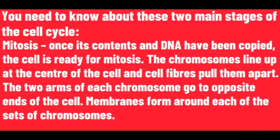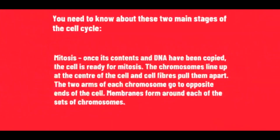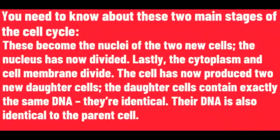The second stage is mitosis. Once its contents and DNA have been copied, the cell is ready for mitosis. The chromosomes line up at the centre of the cell and cell fibres pull them apart. The two arms of each chromosome go to opposite ends of the cell. Membranes form around each of the sets of chromosomes, which become the nuclei of the two new cells. The nucleus has now divided. Lastly, the cytoplasm and cell membrane divide.